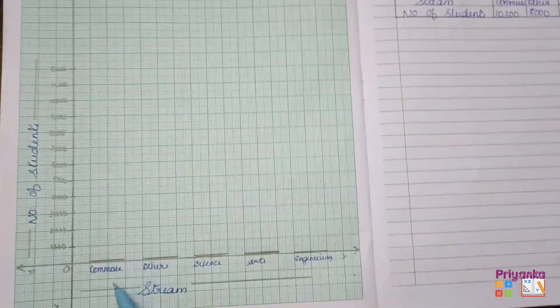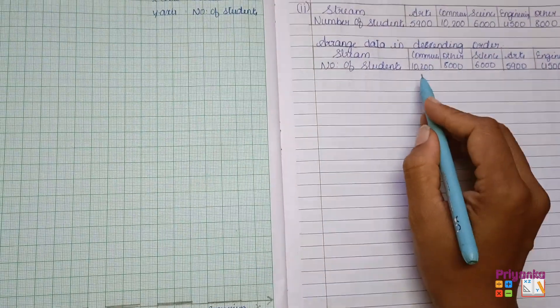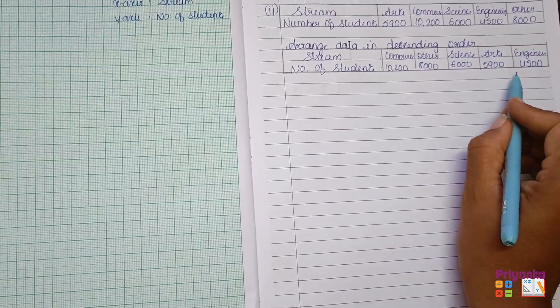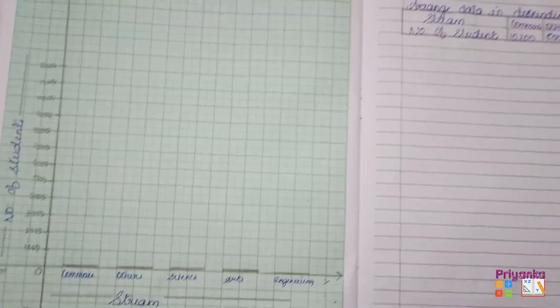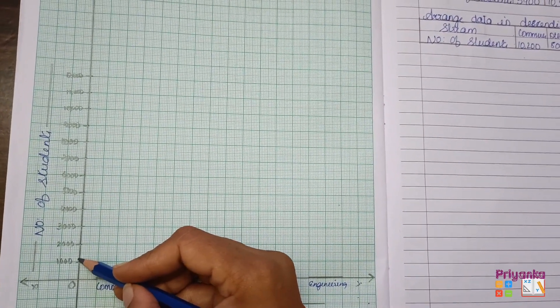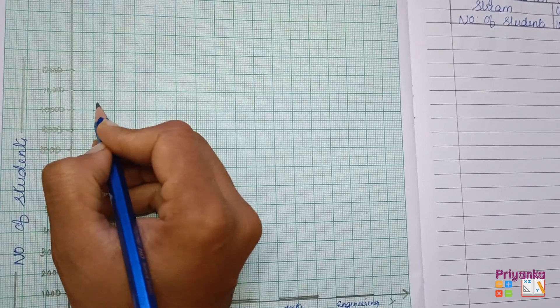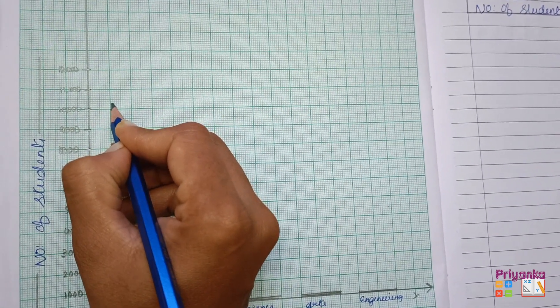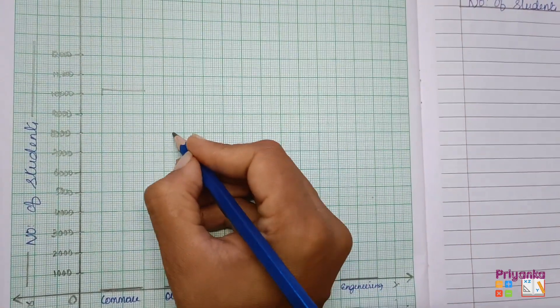After putting all the data in descending order, prepare x-axis and y-axis: streams on the x-axis, number of students on the y-axis with all values above a thousand at a scale of 1 cm per 1000 students. For commerce, the number is 10,200: go till 10,000 and a little more for 10,200. For others it is 8,000, and for science it is 6,000.